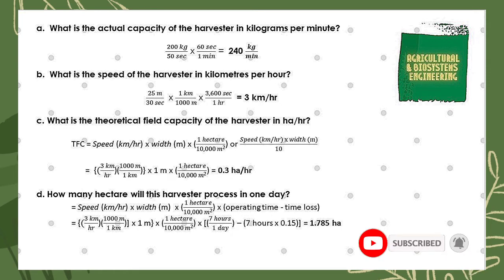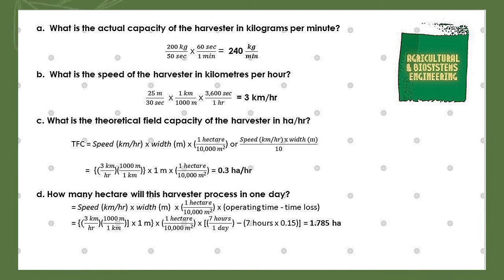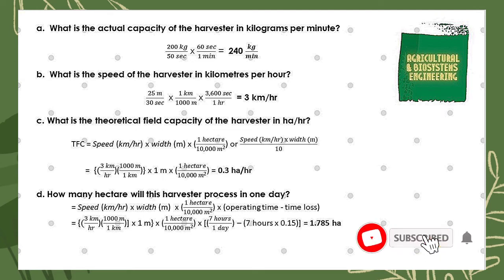Next, we solve for the theoretical field capacity in hectares per hour. We use the formula: speed (km/hr) × width (m) × conversion factor, where one hectare equals 10,000 square meters, or equivalently speed × width divided by 10. We have 3 km/hr × 1000 m/km × 1 m × (1 ha / 10,000 m²), giving a final answer of 0.3 hectares per hour.